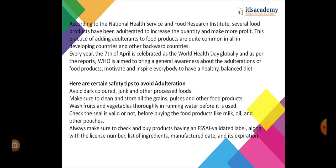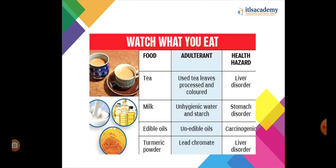Here are certain safety tips to avoid adulteration: avoid dark-colored, junk, and other processed foods; make sure to clean and store all grains, pulses, and other food products; wash fruits and vegetables thoroughly in running water before use; check the seal is valid before buying food products like milk, oil, and other pouches; always make sure to check and buy products having FSSAI validation label along with the license number, list of ingredients, manufacture date, and expiration date.